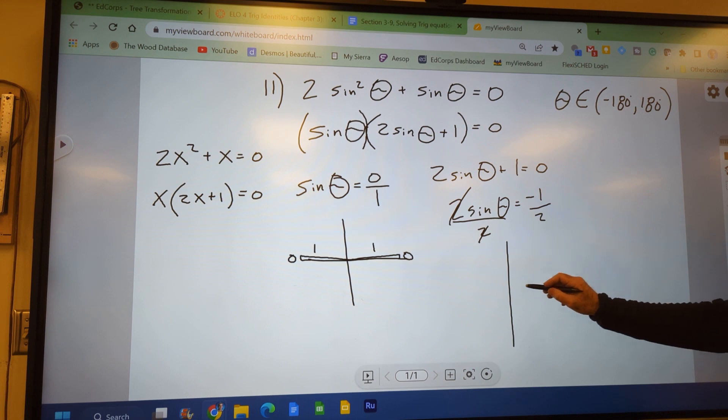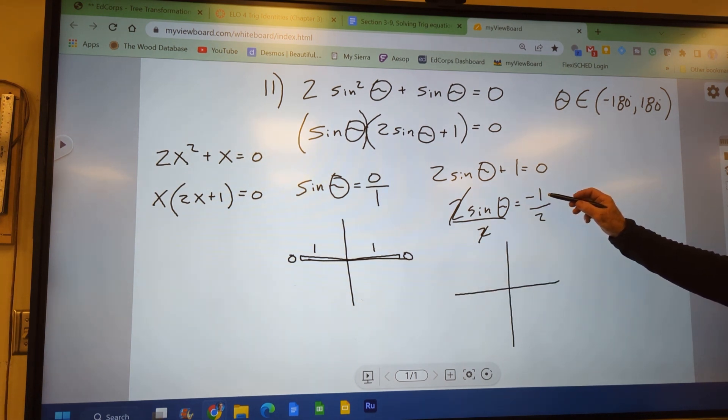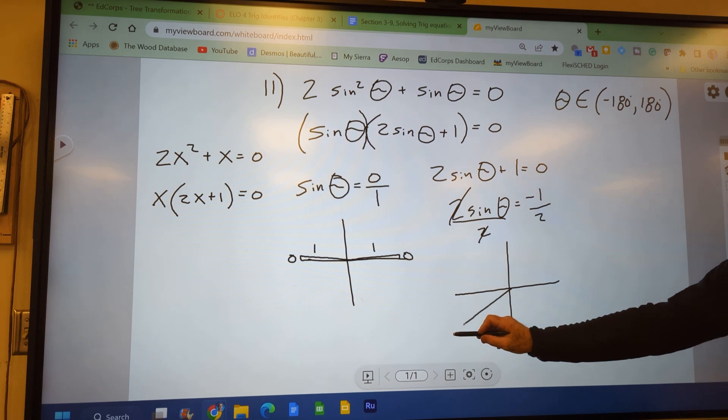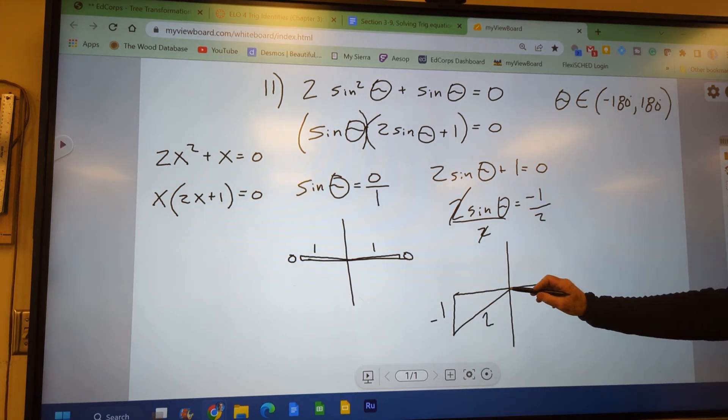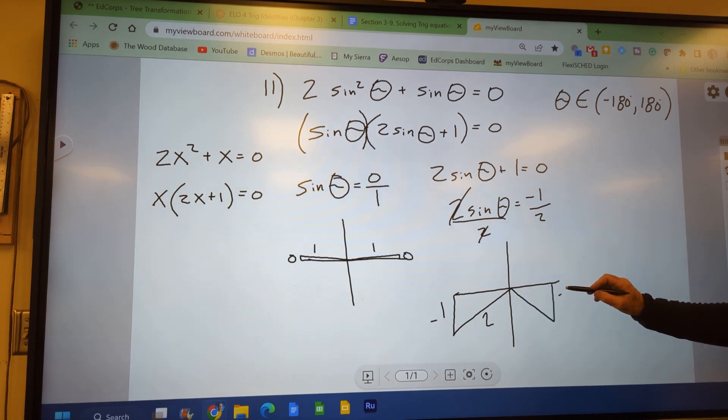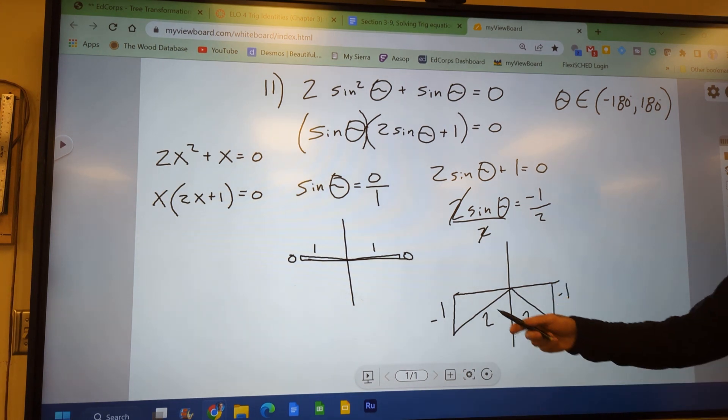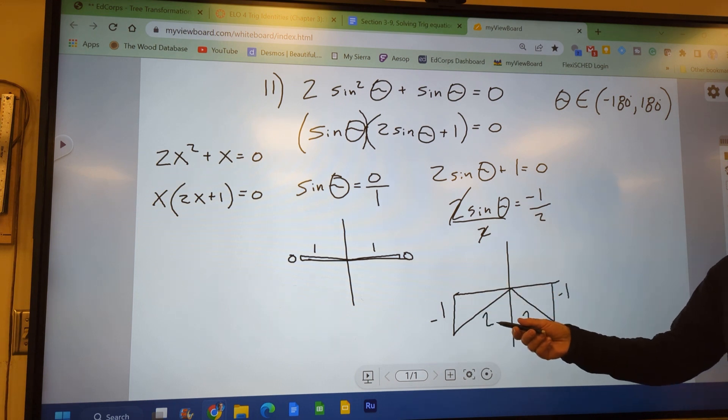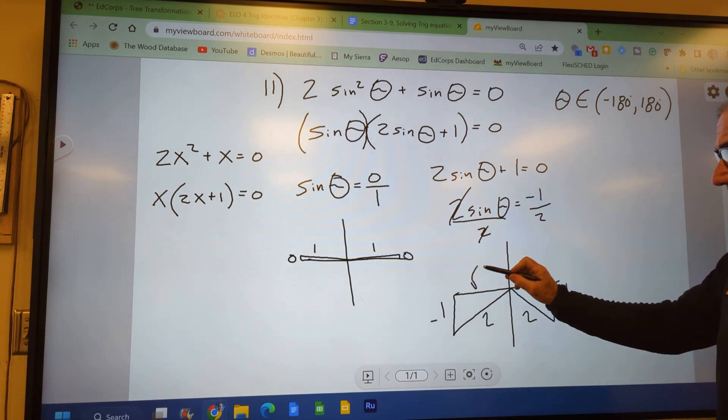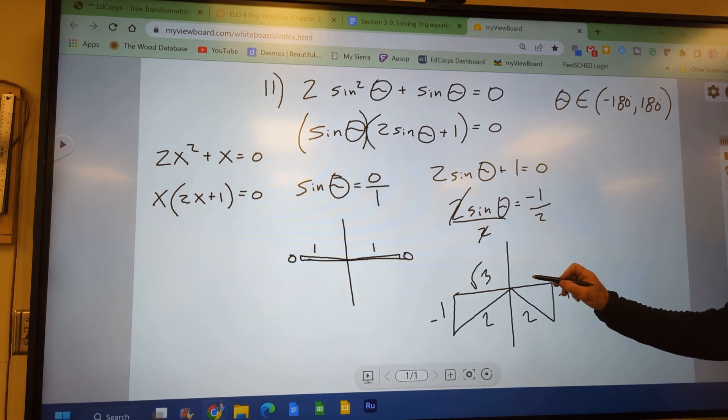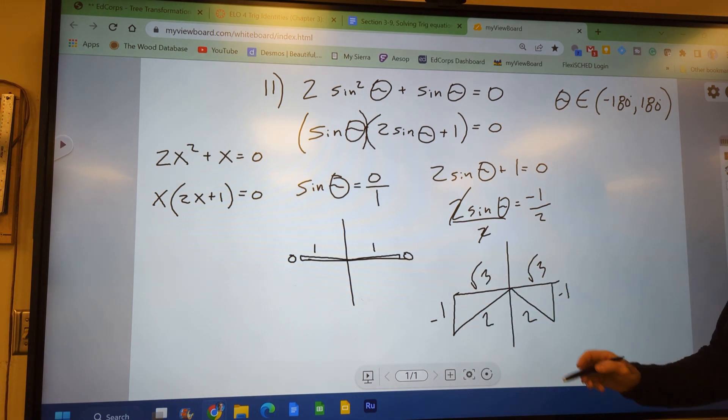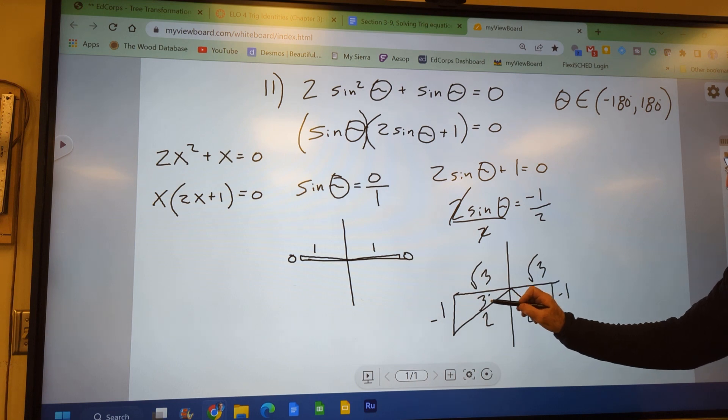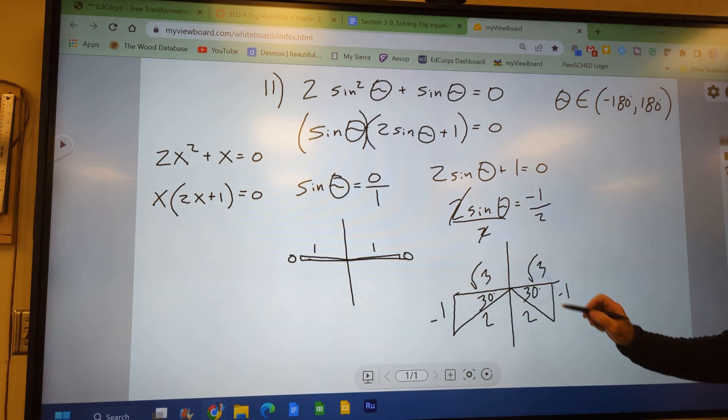So that's going to happen where the opposite is negative 1 and the hypotenuse is 2. These are always going to be exact value problems. Or the opposite's negative 1 down here in the fourth quadrant and the hypotenuse is 2. So I go 1 squared plus what squared equals 2 squared? I recognize it is a 30, 60, 90. Because the ratio of the sides is 1 to root 3 to 2. I got that with the Pythagorean theorem. This is a 30 reference triangle and a 30 reference triangle.